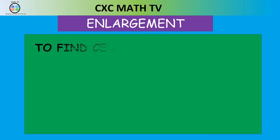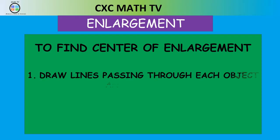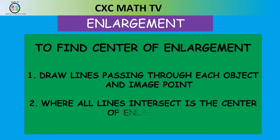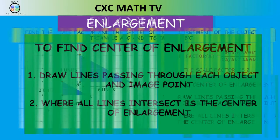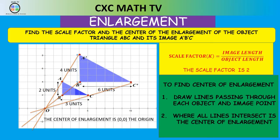Next, we find the center of enlargement. To do this, draw lines passing through each object and image point. Where all the lines intersect is the center of enlargement. We draw a line through A and A prime, through B and B prime, and through C and C prime. We notice they all intersect at the origin.